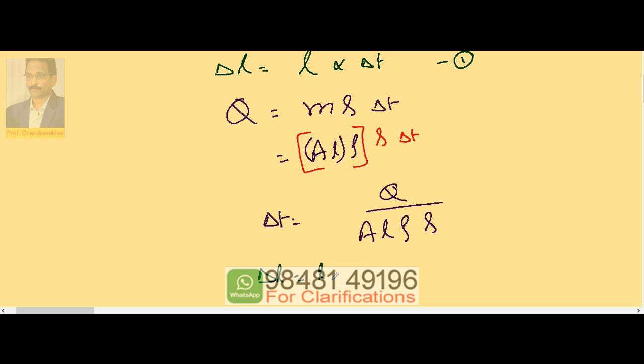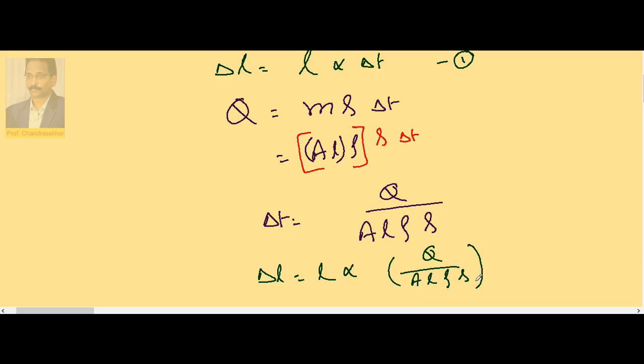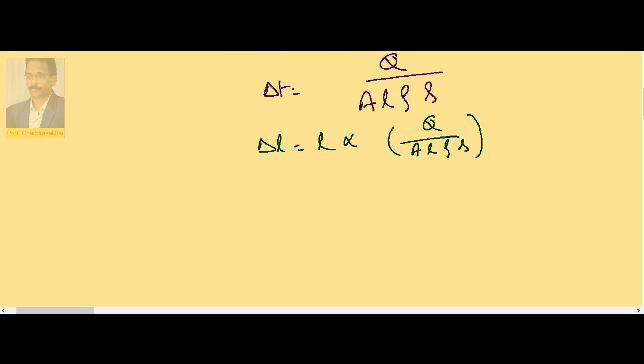So delta L becomes L alpha times Q divided by A L rho S. Here both rods are made of same material.